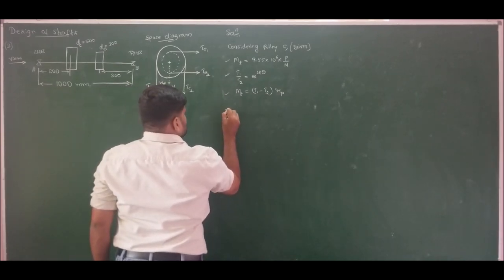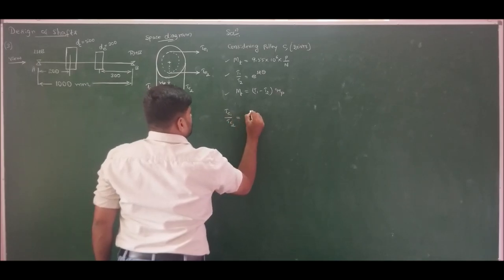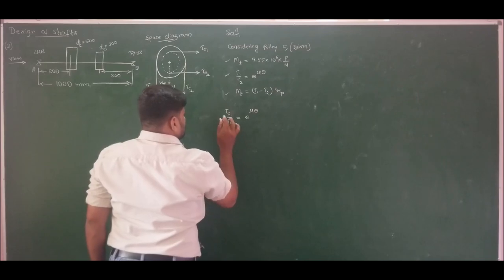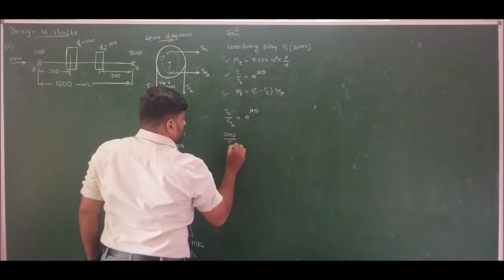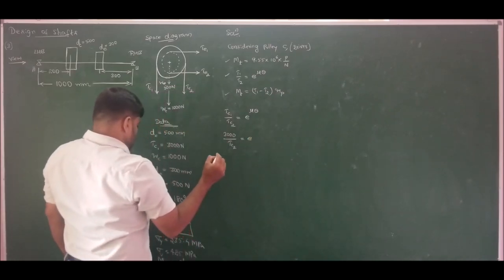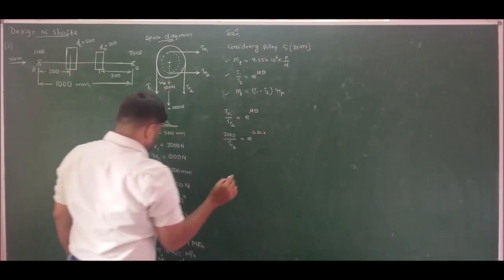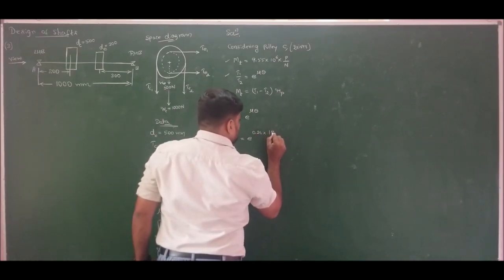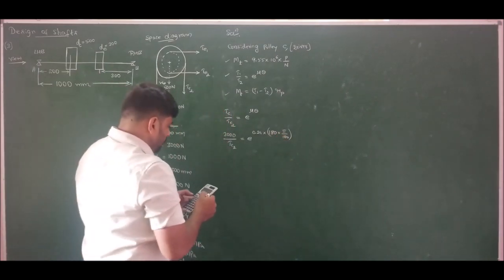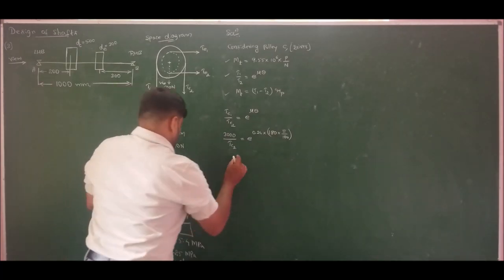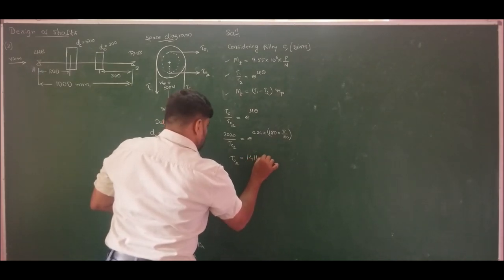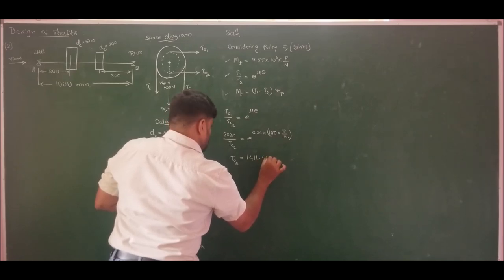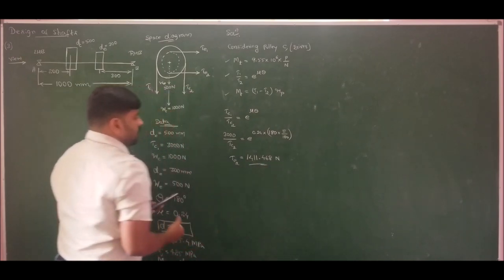Using the second equation for Pulley C: TC1/TC2 = e^(μθ). TC1 is 3000 N. Substituting μ = 0.24 and θ = 180° = π radians, I calculate TC2. TC2 = 3000 / e^(0.24 × π) = 1411.468 N. So both belt tensions for Pulley C are now known.